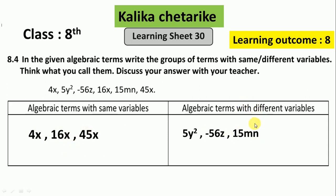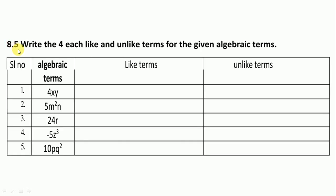The same variables we call like terms and the different variables we call unlike terms. Next, 8.5: Write four each like and unlike terms for the given algebraic terms. Here algebraic terms are given. We have to write like terms and unlike terms.